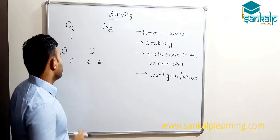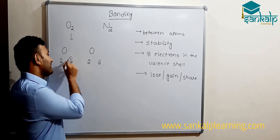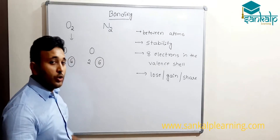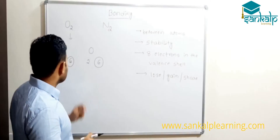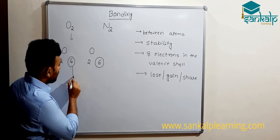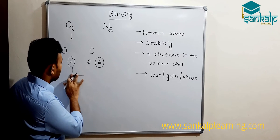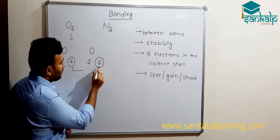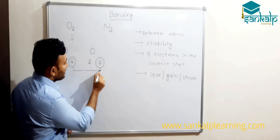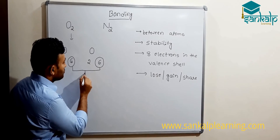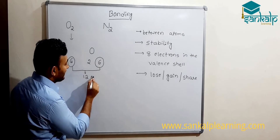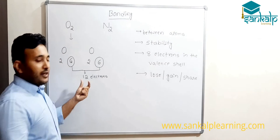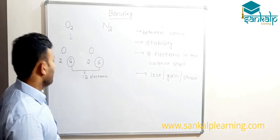Only the valence electrons can take part in bond formation. So how many valence electrons are there? Six valence electrons from one oxygen atom and six valence electrons from another oxygen atom — altogether there are 12 valence electrons.